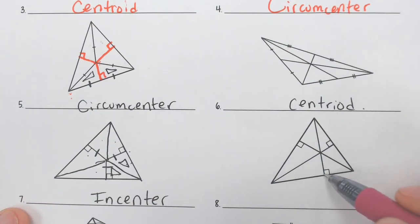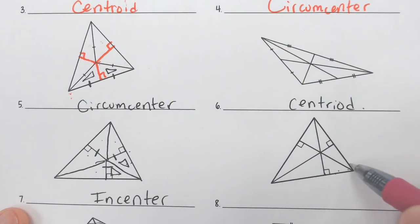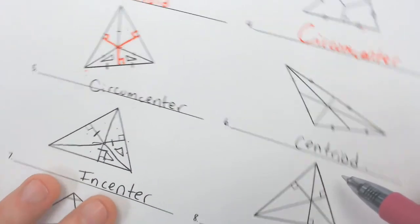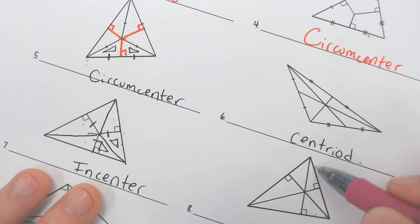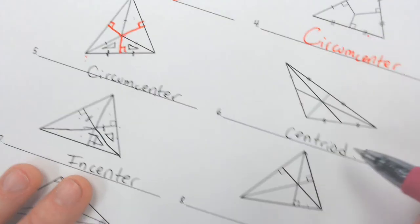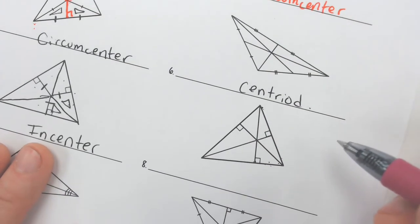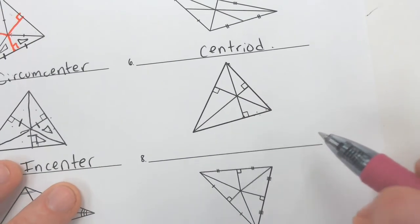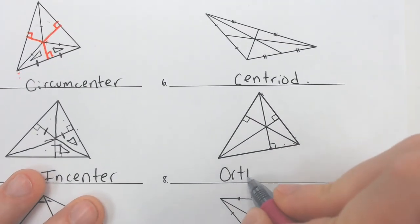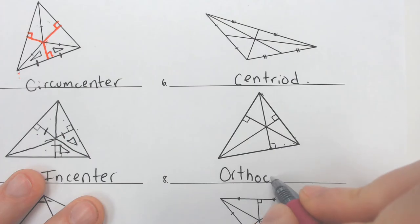The last problem is not cutting the sides in half, not cutting the angles in half — it looks like the height of the triangle. We went with a 90 degree angle straight to the other corner. So this is going to be the orthocenter.